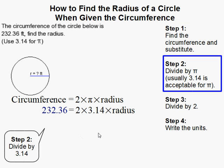The next step is to divide by pi. Most teachers allow you to use 3.14 for pi, so that's what we are going to do in this problem. So I divide both sides by 3.14.